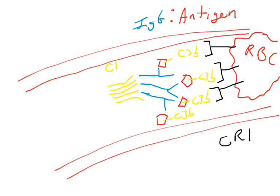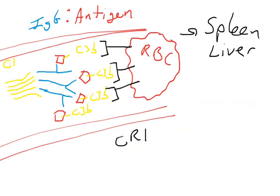Red blood cells have a complement receptor on them: CR1. Erythrocytes are sacs of hemoglobin that transport oxygen from the lungs to the tissues, yet they have this immune receptor CR1. Why would a red blood cell have CR1? Red blood cells are not phagocytes — they're not going to phagocytose anything. But they will bind the C3B that is attached to the surface of the pathogen and transport it to macrophages in the liver and in the spleen.